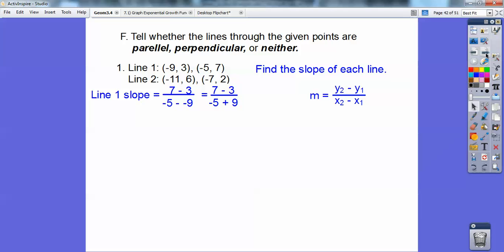y₂ minus y₁, so I did this y right here minus this y right here over this x minus this x. That's 5 minus negative 9. It becomes 5 plus 9. 7 minus 3 is 4, and negative 5 plus 9 is 4. So the slope of line 1 is 1.